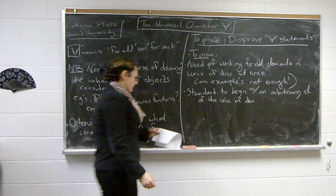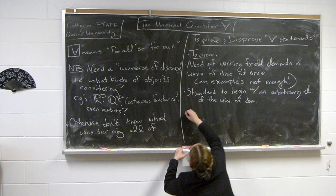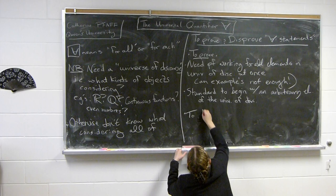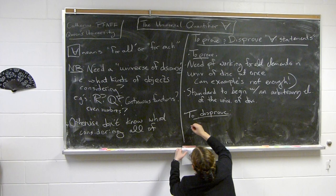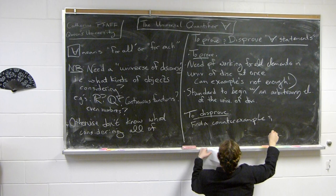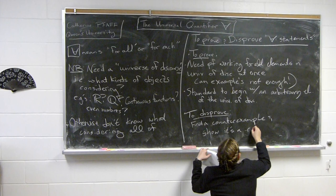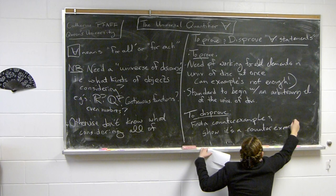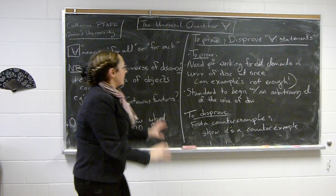To disprove a 'for all' statement, on the other hand, you only need a single counterexample. You'll often see that to disprove a statement you can use a single counterexample, even though an example isn't enough to prove a statement. So we want to find a counterexample and show it is indeed a counterexample.